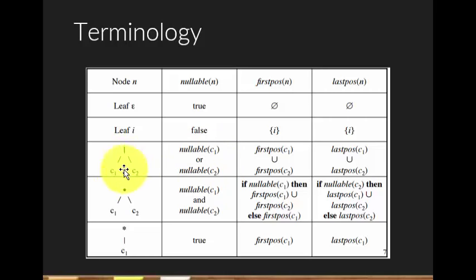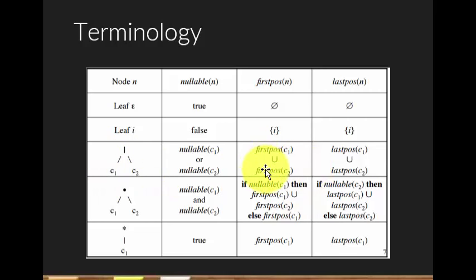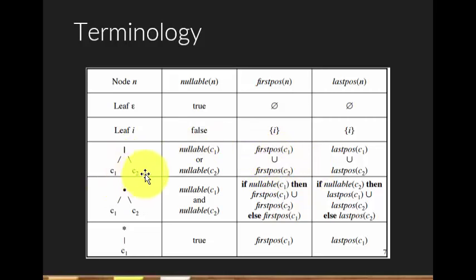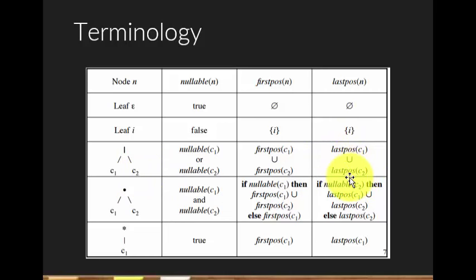For an OR node, C1 or C2 means C1 could be nullable or C2 could be nullable. The firstpos of the OR node is the union of C1 and C2's firstpos, and the lastpos is also the union of C1 and C2's lastpos.